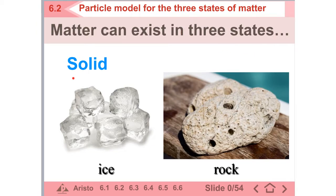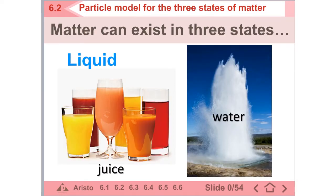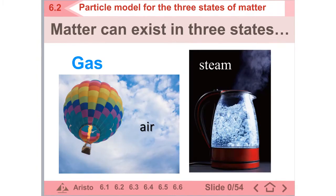The first one will be solid. Solid includes ice and rock like this one. And then we have liquid, for example juice and water — they are liquid. And then we also have the last state which is gas, including air and steam.